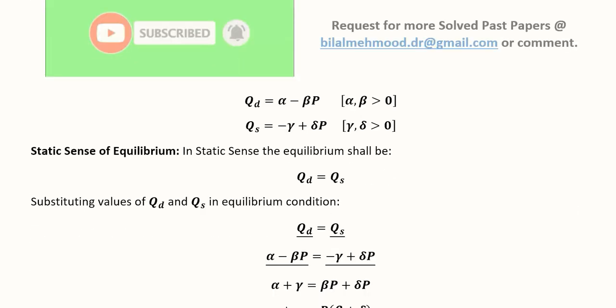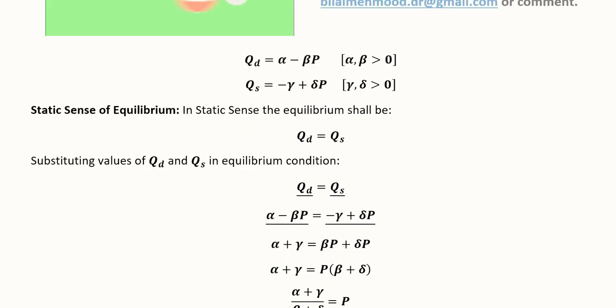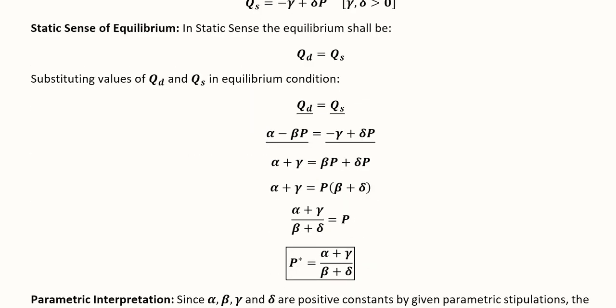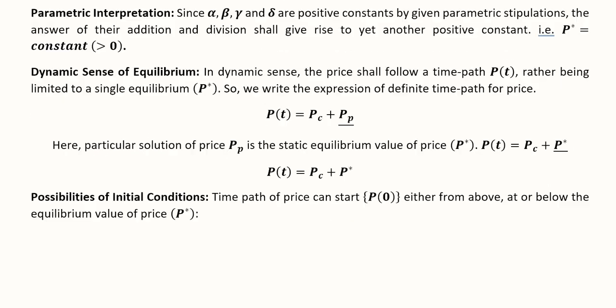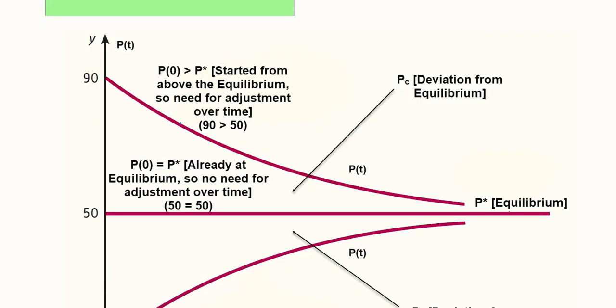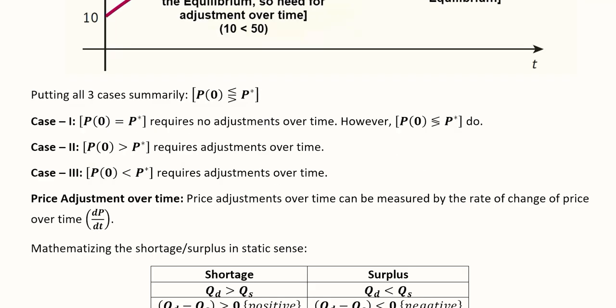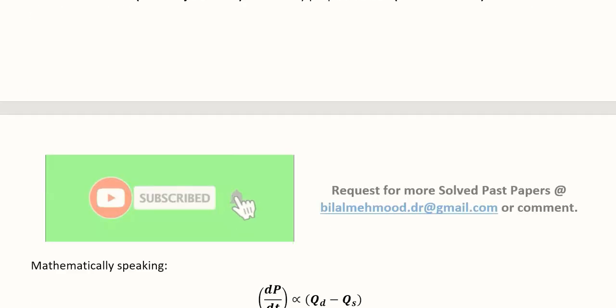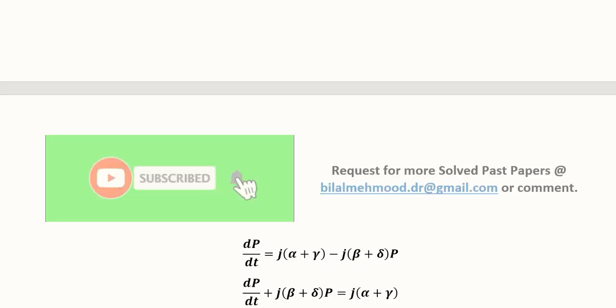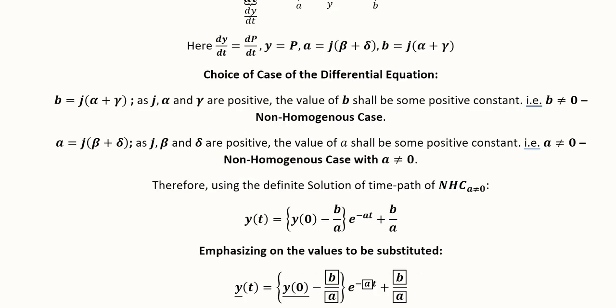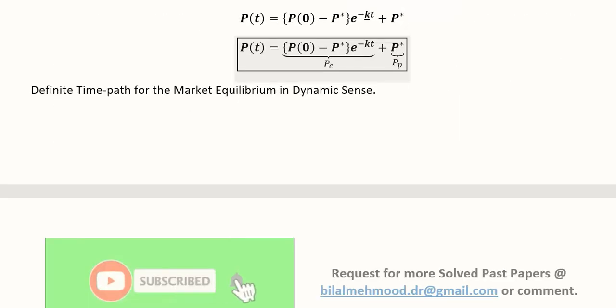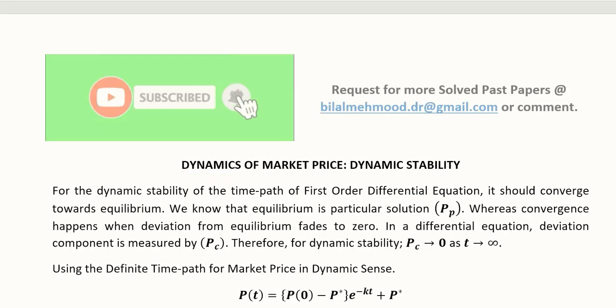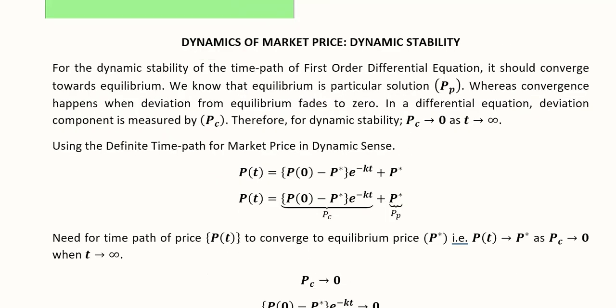This is simply a scroll through of this model. This was the framework of this model and then this was the diagram and then this was the solution starting after this. So after the solution we got the time path which would be interpreted for its dynamic stability.